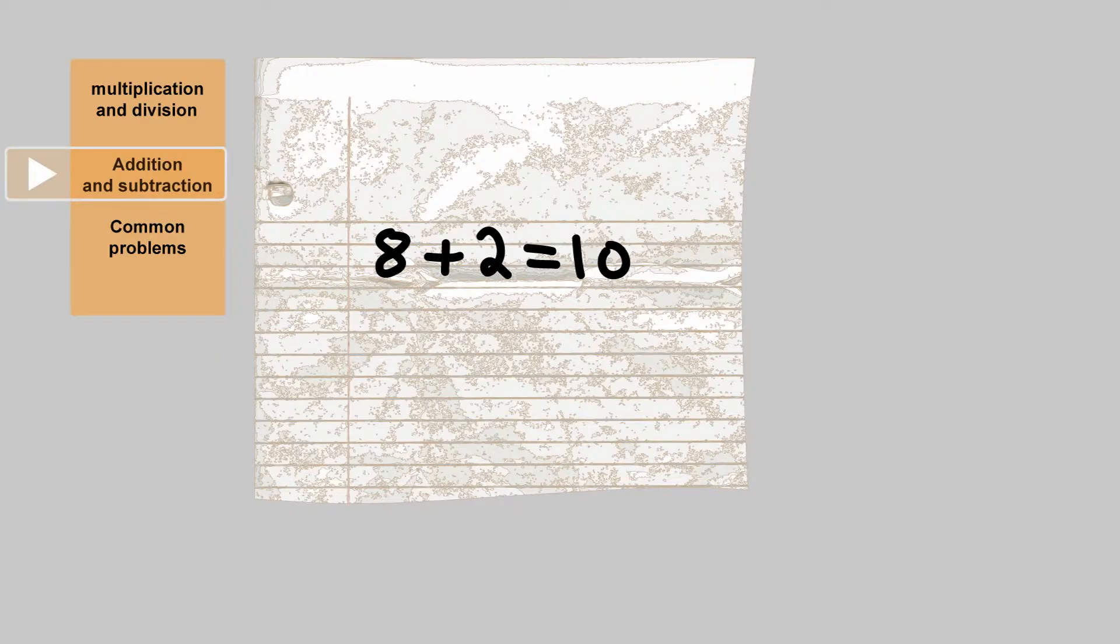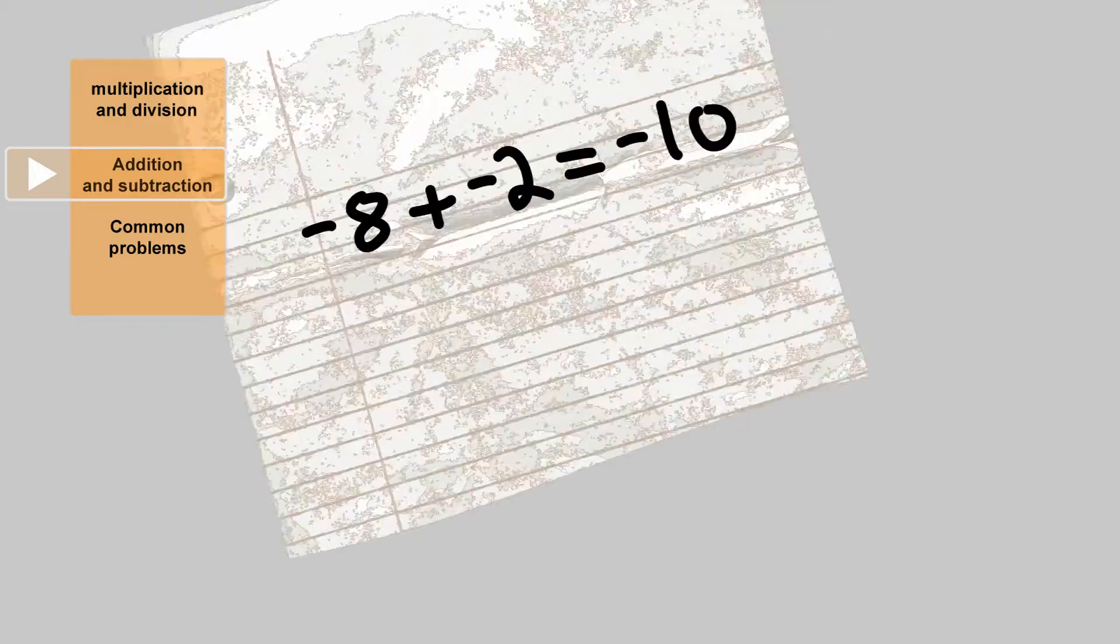What usually causes more confusion is addition. With this example here, the signs are the same, so you keep the sign and add the numbers together. No real surprises there. Now let's take the same example, but this time the 8 is negative, as is the 2. The signs are the same, so as before, you keep the sign, but this time they are negative.